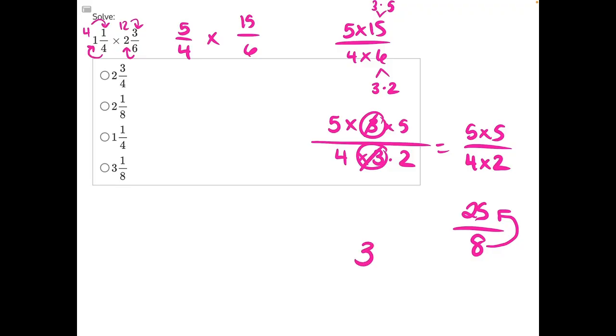If we look at all of our answer choices, there's only one possible answer where 3 is the mixed number. And that is going to be answer choice D, our correct answer.